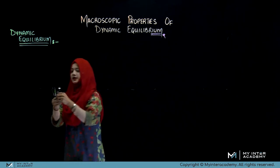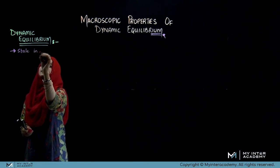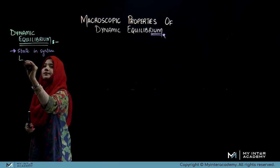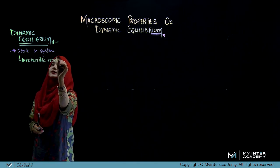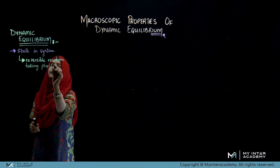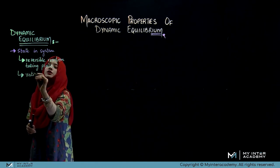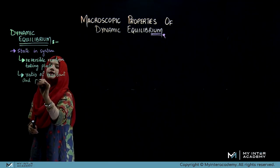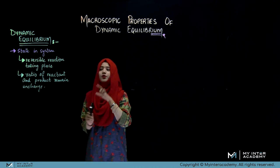So, dynamic equilibrium is a state of a system in which a reversible reaction is taking place — and this is very important — a reversible reaction is taking place such that the ratio of reactants and products remains unchanged.